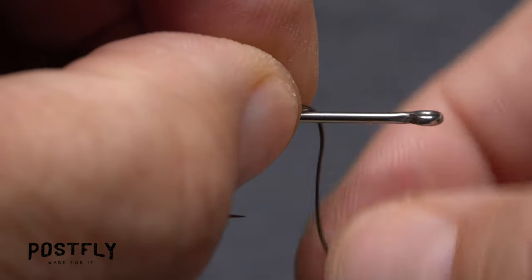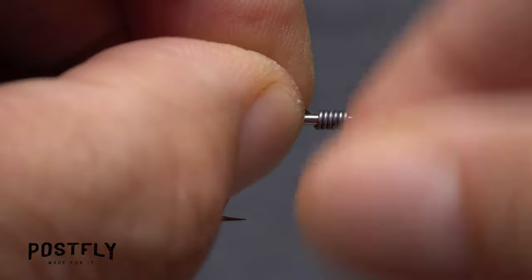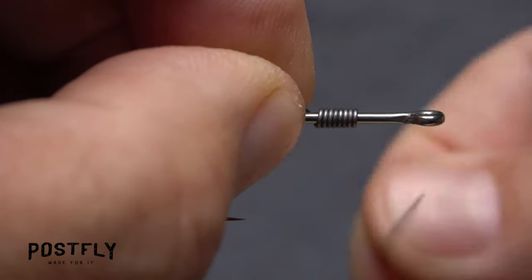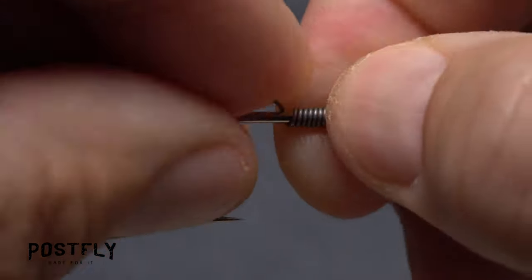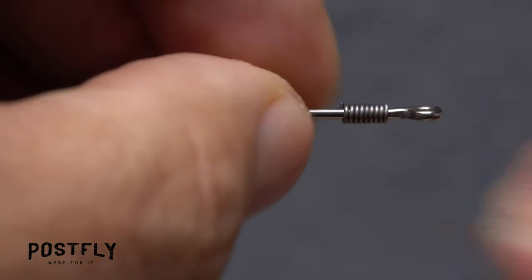Grip one end in the fingertips of your left hand as you take touching wraps forward up the hook shank with your right. Make eight to ten wraps before helicoptering the wire in your right hand to break it off close. You can then tuck in the remaining tail with your left.